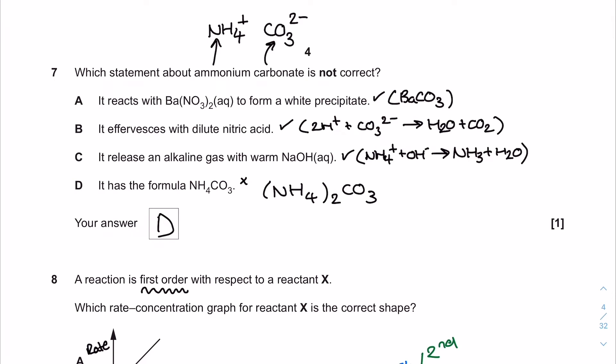Which statement about ammonium carbonate is not correct? I've written out the ions. It reacts with barium nitrate to form a white precipitate - yes, barium carbonate forms. It effervesces with dilute nitric acid - absolutely, we make CO2. It releases an alkaline gas with warm sodium hydroxide - definitely, the ammonium ion reacts with hydroxide to produce ammonia gas. It has the formula NH4CO3 - absolutely not. The carbonate ion is CO3^2- and ammonium is NH4+, so the formula is (NH4)2CO3. The correct answer for the incorrect statement is D.